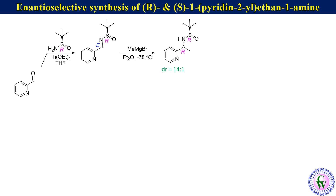With allyl magnesium bromides the diastereoselectivity is low. Purification of the major diastereomer followed by deprotection of the sulfinyl group with HCl in dioxane produces R-1-(pyridin-2-yl)ethane-1-amine as the HCl salt.